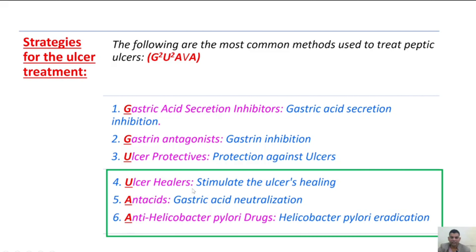The second U is ulcer healers — these are the drugs that stimulate ulcer healing. Next A is antacids — the drugs that neutralize gastric acid. One more A is anti-Helicobacter pylori drugs — the drugs that eradicate Helicobacter pylori.